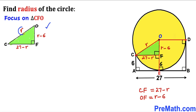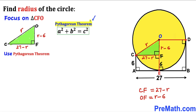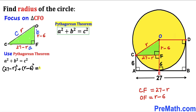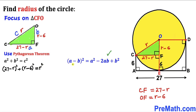Let's focus on right triangle CFO with side lengths FC = 27 − r, OF = r − 6, and hypotenuse CO = r. Our task is to solve for radius r using the Pythagorean theorem: a² + b² = c². Here, a = 27 − r, b = r − 6, and c = r (the hypotenuse). Filling in: (27 − r)² + (r − 6)² = r².